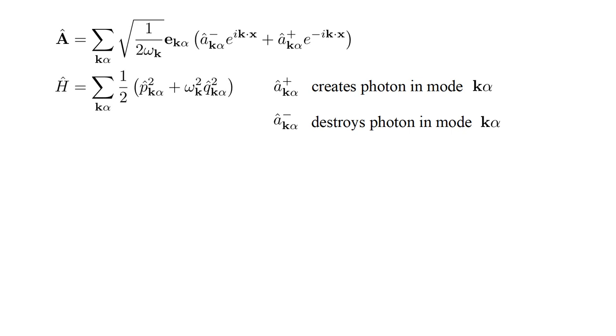The Hamiltonian operator for the entire field is simply the sum of the operators for each mode, (1/2)[p̂²_{k,α} + ω_k² q̂²_{k,α}], which can be written as the sum over all modes of [n̂_{k,α} + 1/2]ℏω_k, where the number operator, n̂_{k,α}, is â†_{k,α} â_{k,α}.